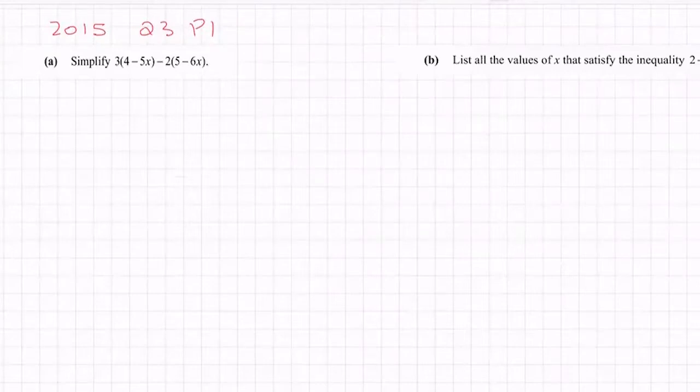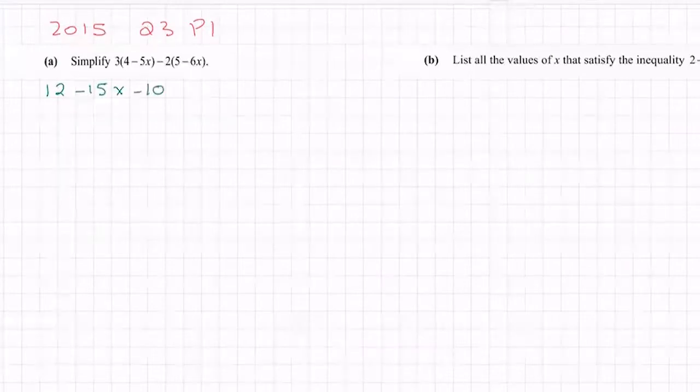So 3 times 4 minus 5x, so 3 times 4 is 12, 3 by minus 5x is minus 15x, minus 2 by 5 is minus 10, minus by minus is a plus, 2 times 6 is 12x.